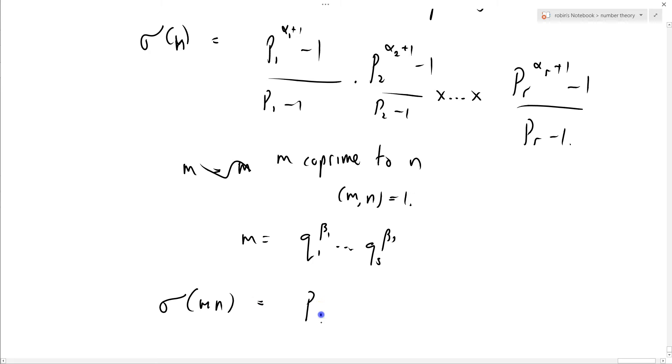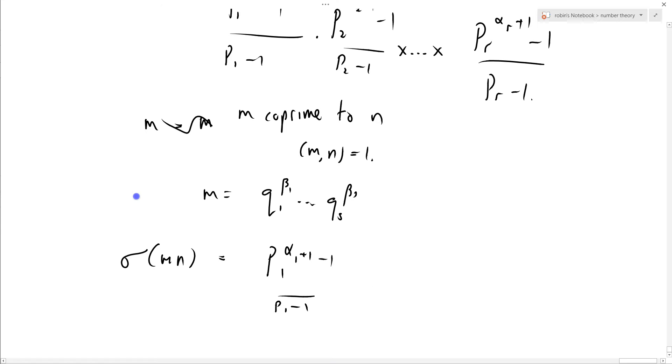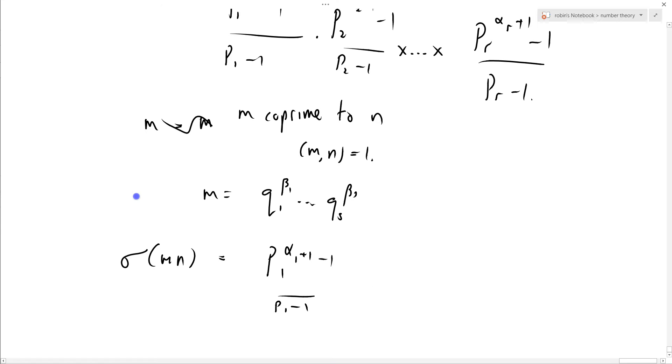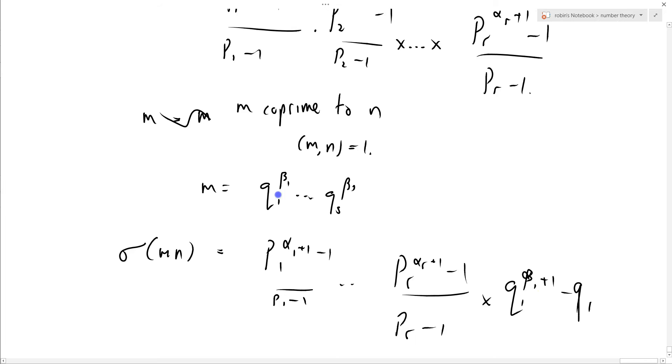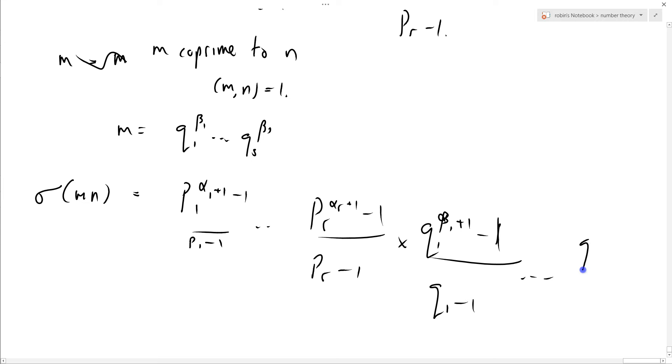we can establish that sigma of mn equals p1 to the alpha 1 plus 1 minus 1 over p1 minus 1, all the way up to pr to the alpha r plus 1 minus 1 over pr minus 1, times q1 to the beta 1 plus 1 minus 1 over q1 minus 1, all the way up to qs to the beta s plus 1 minus 1 over qs minus 1,